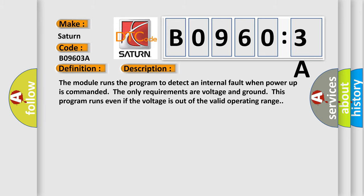The module runs the program to detect an internal fault when power-up is commanded. The only requirements are voltage and ground. This program runs even if the voltage is out of the valid operating range.